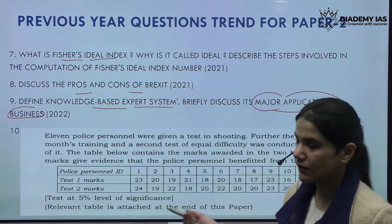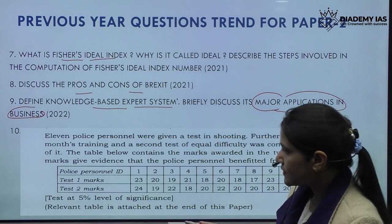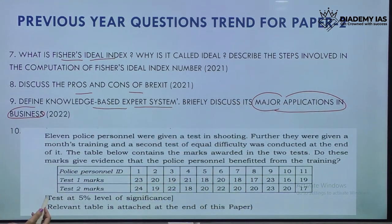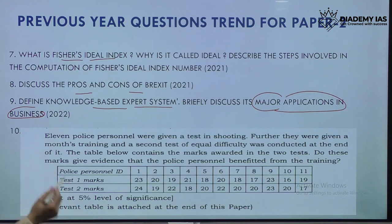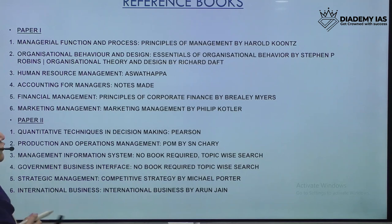Question ten is a numerical-based question where they have provided a table and asked you to give evidence to the personal benefit from training — these numerical questions are very easily attempted once you have gone through practice of such questions.